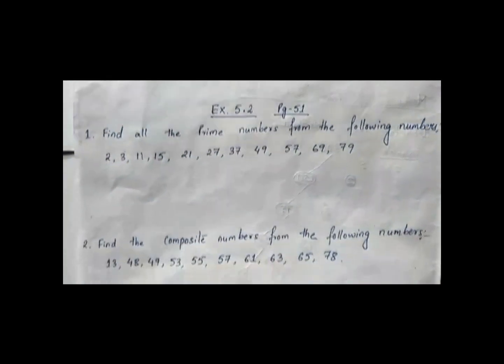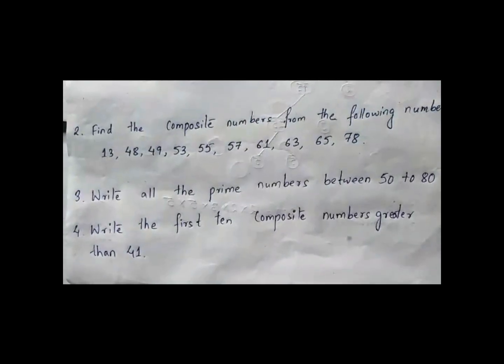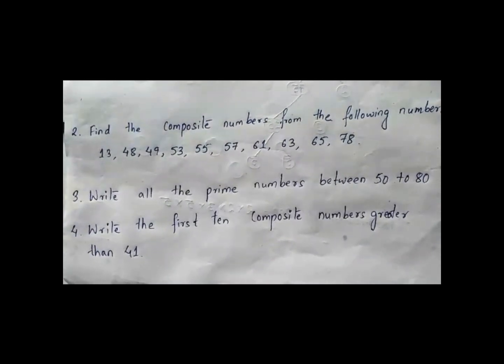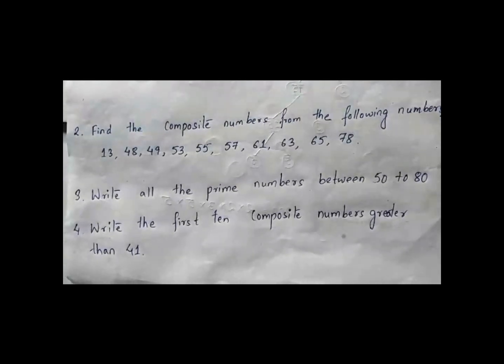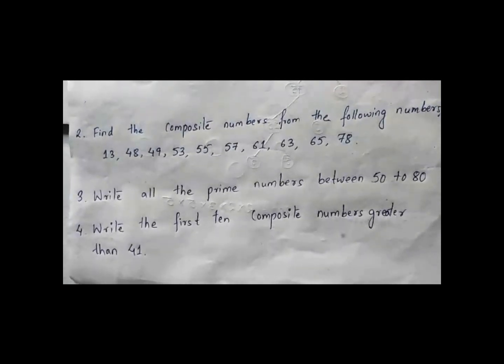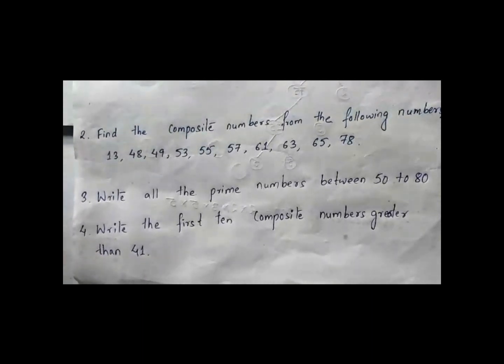Second question: find the composite numbers from the following numbers. In the same way, you know that composite numbers are numbers which have more than 2 factors, so you can solve it yourself. Question 3: write all the prime numbers between 50 and 80. Question 4: write the first 10 composite numbers greater than 45, which will start from 46. Try to do questions 3 and 4 yourself.